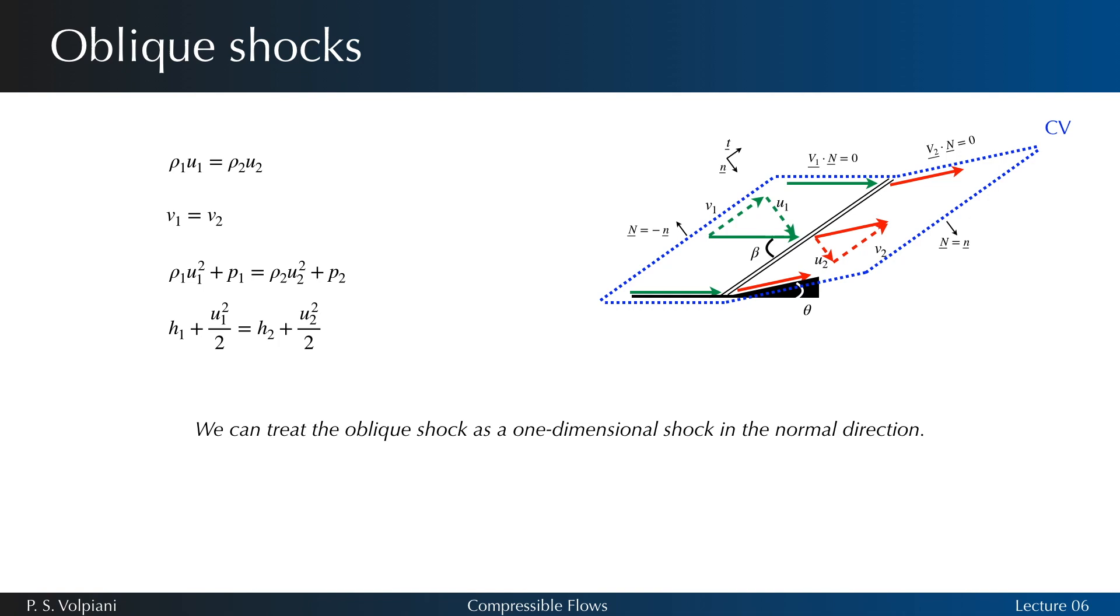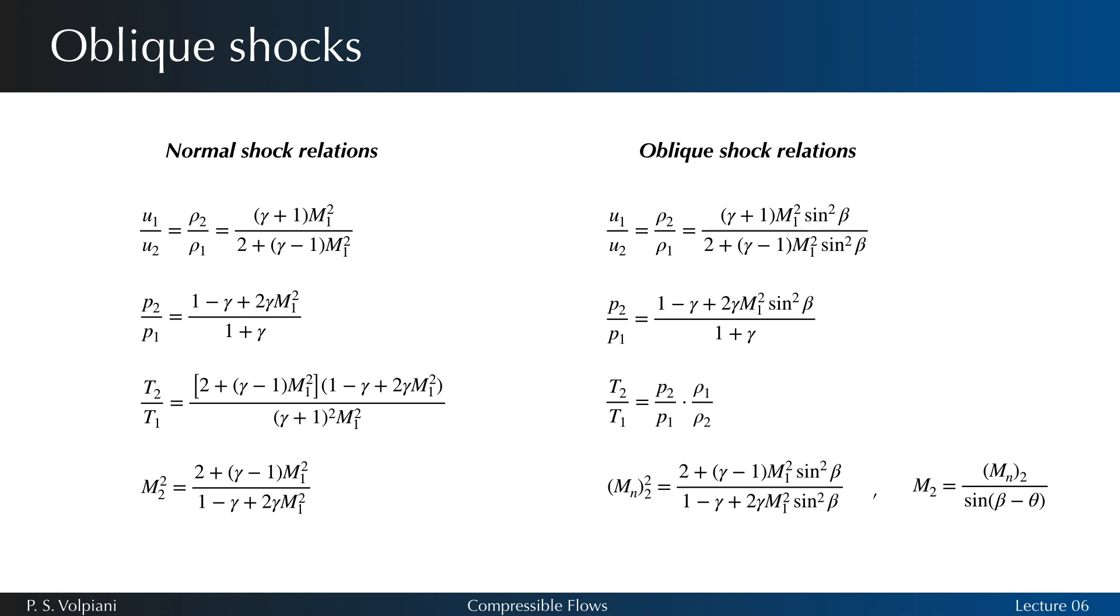Thus, it is wise to define a normal Mach number MN1. Taking into account the geometry of the problem, we see that MN1 equals M1 sine beta. So, to obtain the expressions for an oblique shock, we replace M1 by M1 sine beta in the 1D equations. Thus, the changes across an oblique shock are functions of the upstream Mach number M1 and the shock angle beta. The normal shock is a special case where beta equals 90 degrees.